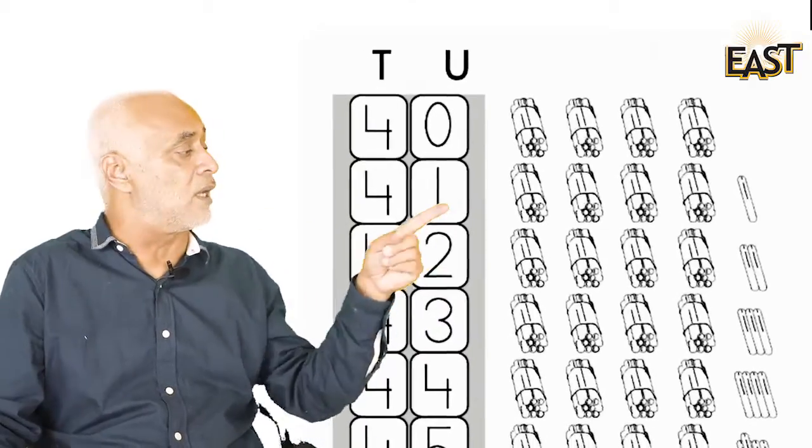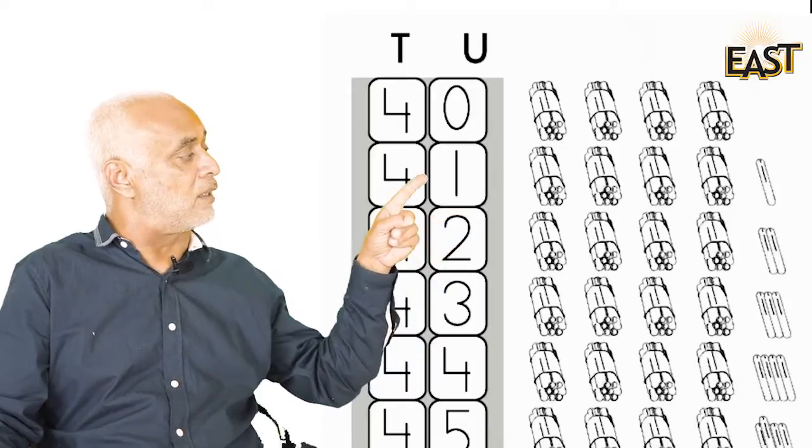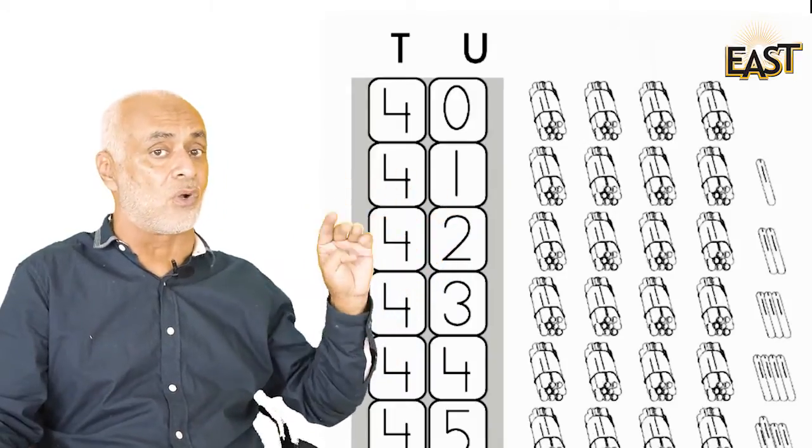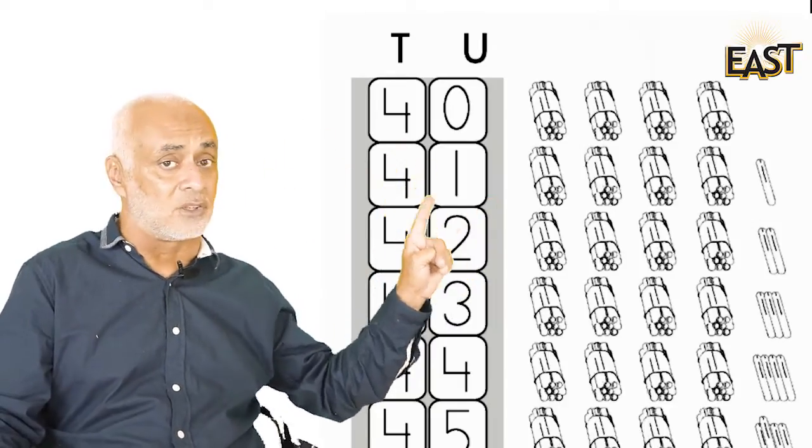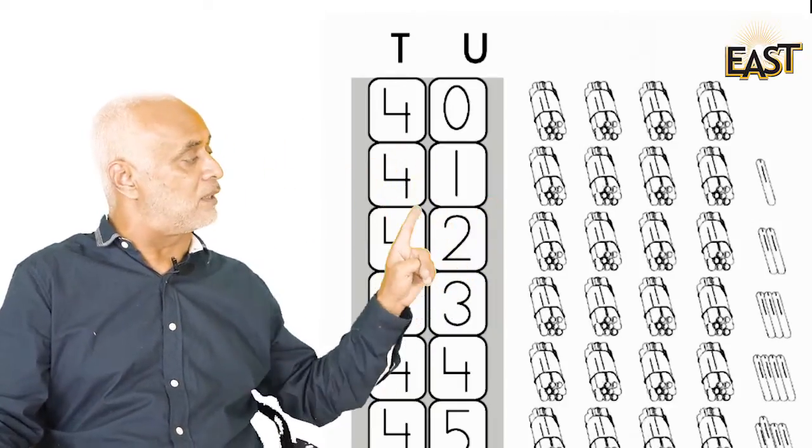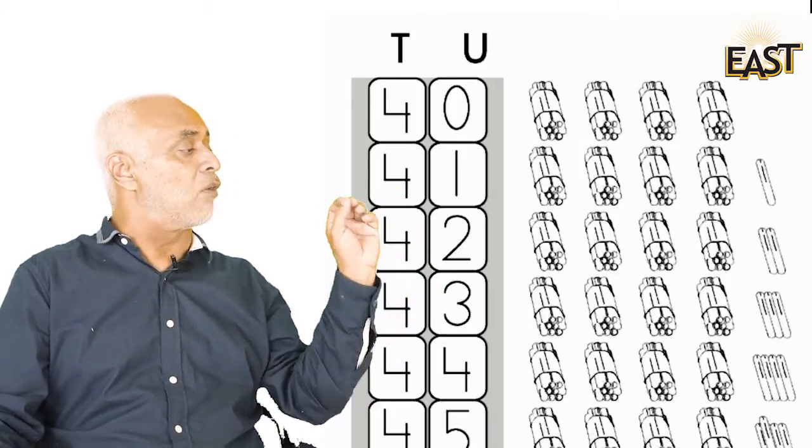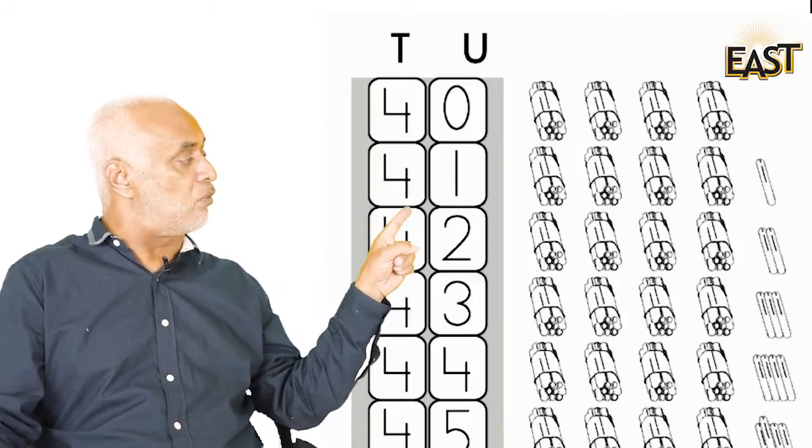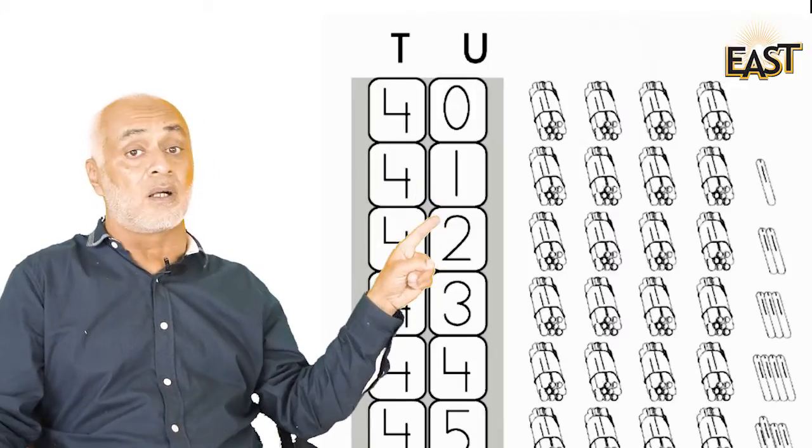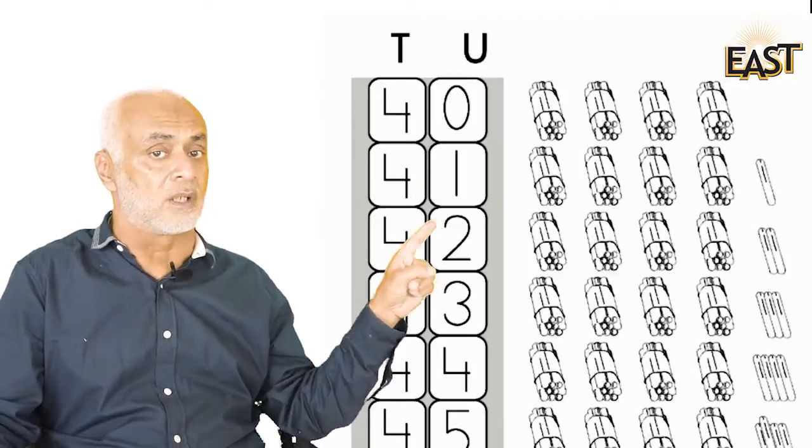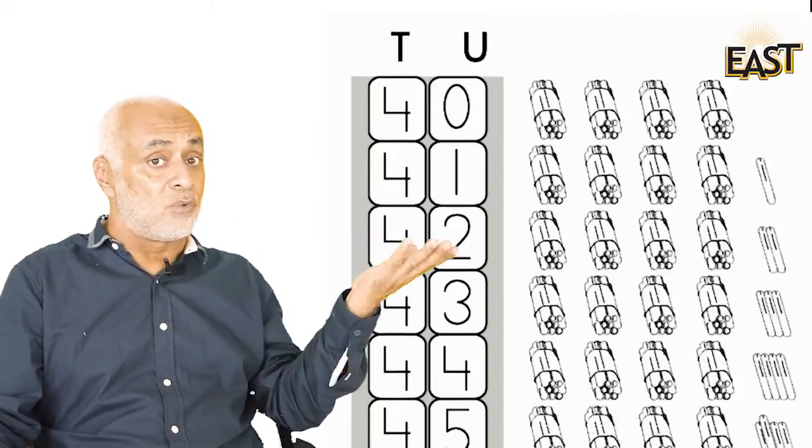Now let's move on. Then we have four tens, one, two, three, four, and we have one unit. So four tens and one is forty-one. Four we write under the ten and one we write under the unit, so that becomes forty-one.